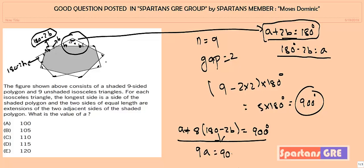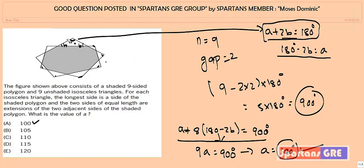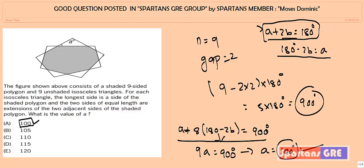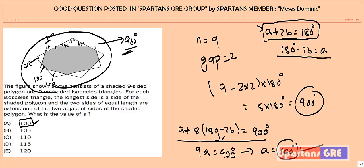Substituting: the total becomes 9A = 900 degrees, so A = 100 degrees. You can also verify by substitution: if A = 100°, then the two base angles are each 40°. The vertically opposite angles are also 40°, making each triangle's apex angle 180 minus 80 = 100°. All 9 vertex angles are 100°, giving a total of 900° — which matches. So the answer is A = 100 degrees.